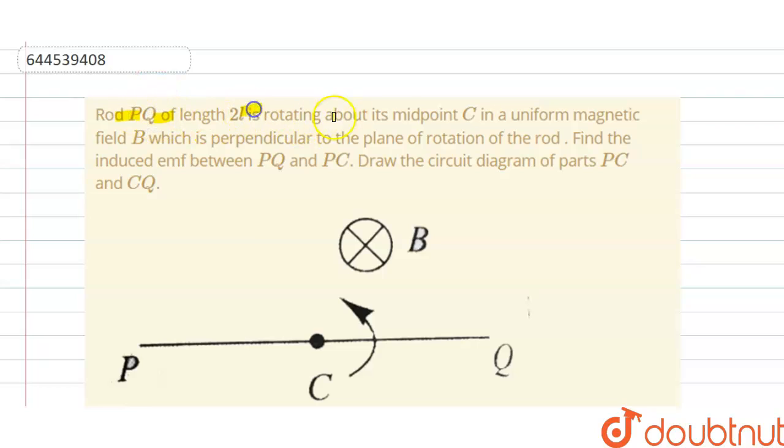Rod PQ of length 2l is rotating about the midpoint C in the uniform magnetic field B which is perpendicular to the plane of rotation of the rod. Find the induced EMF between PQ and PC, and draw the circuit diagram of parts PC and CQ.